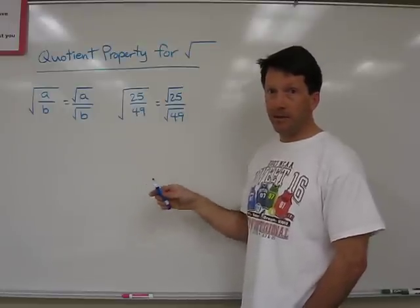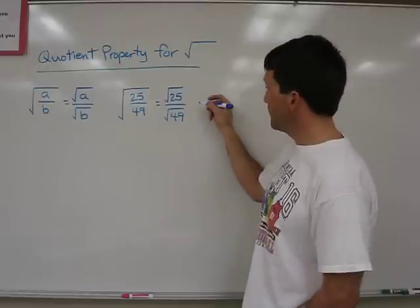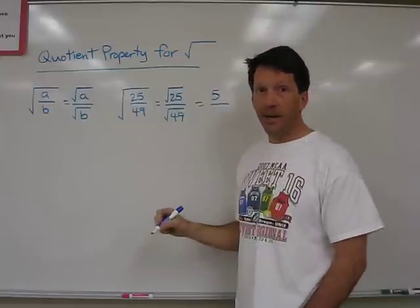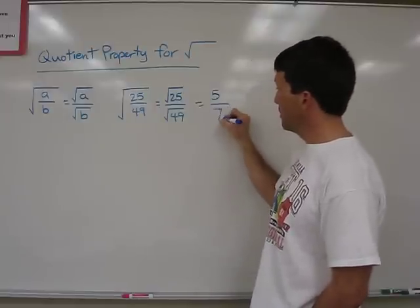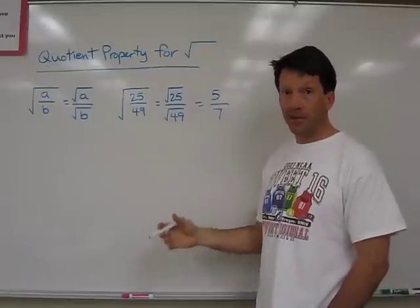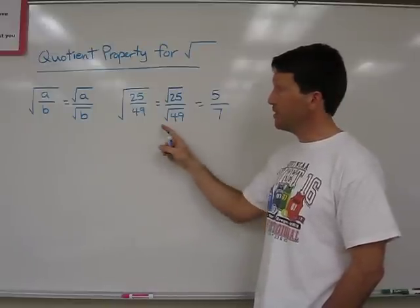I know the square root of 25 is 5 and the square root of 49 is 7, so my answer is just the simple fraction 5 over 7.